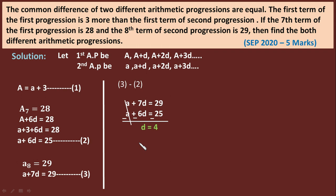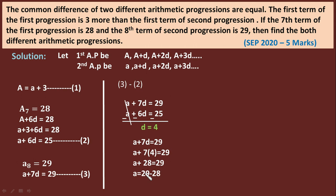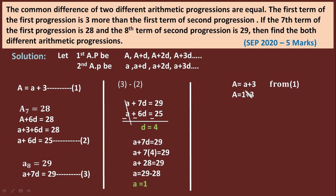Now let us find capital A and small a. Take equation 3: a + 7d = 29. Substituting d = 4: a + 7×4 = 29, so a + 28 = 29, giving small a = 1. From equation 1, capital A = small a + 3 = 1 + 3 = 4. So capital A = 4.